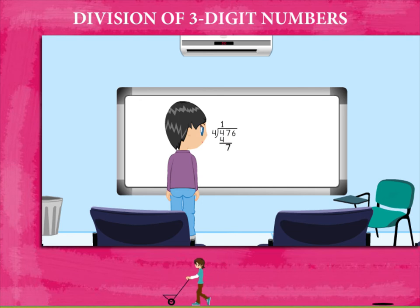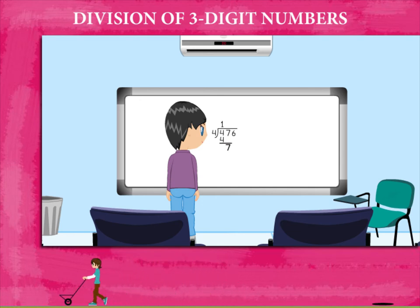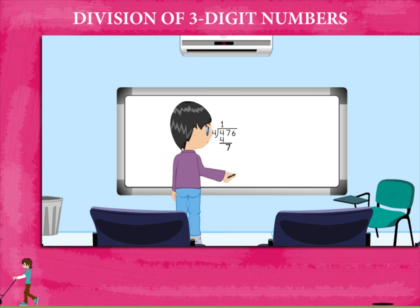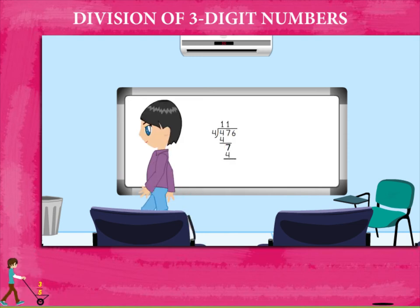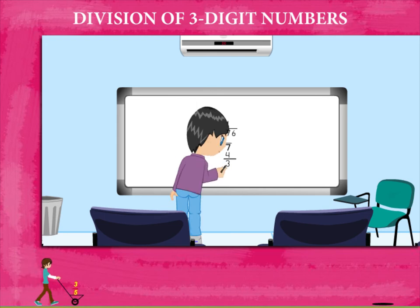He copies the next digit 7. 4 goes into 7 ones, so he writes 1 at the top and subtracts 4 from 7. He gets 3.